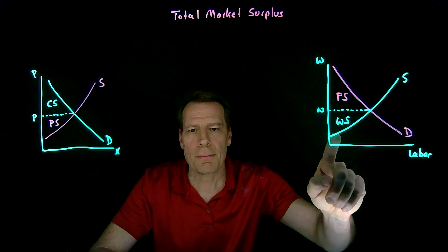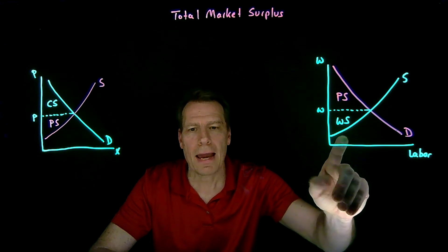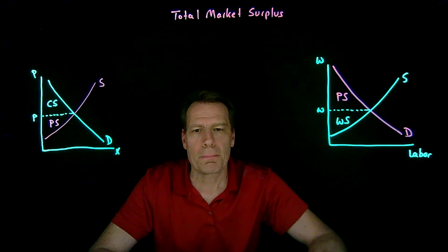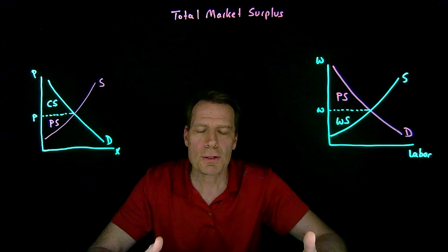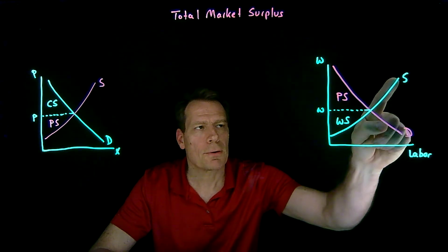The curve that comes from the consumer model has income and substitution effects. But the curves we use to measure surplus only have substitution effects. So this labor supply curve,